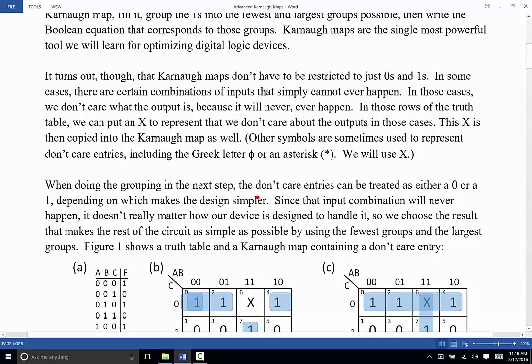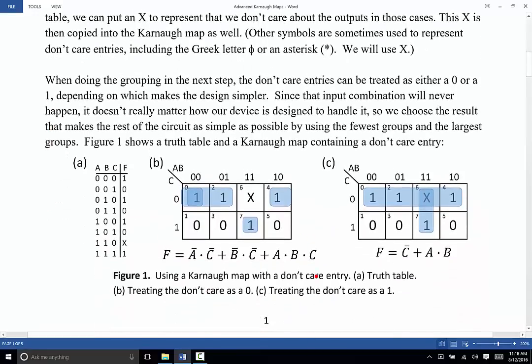The thing to know about a don't care entry is that when you're doing the grouping, a don't care can be treated as either a zero or a one. It's a wild card. It's a joker. And it can be used to match up with whatever other cells are around it in the way that gives you the best possible result. And I think the best way to understand that is to see an example.